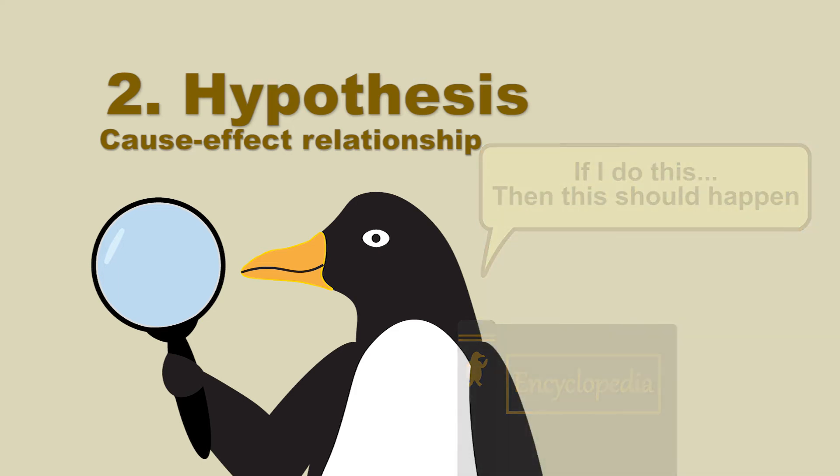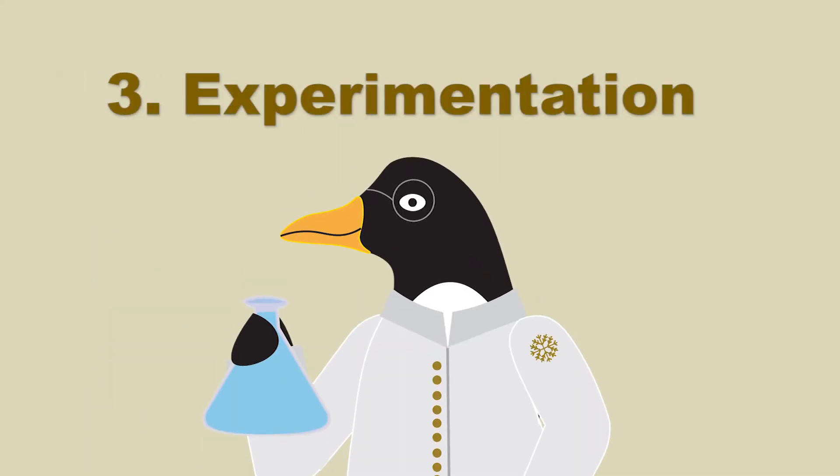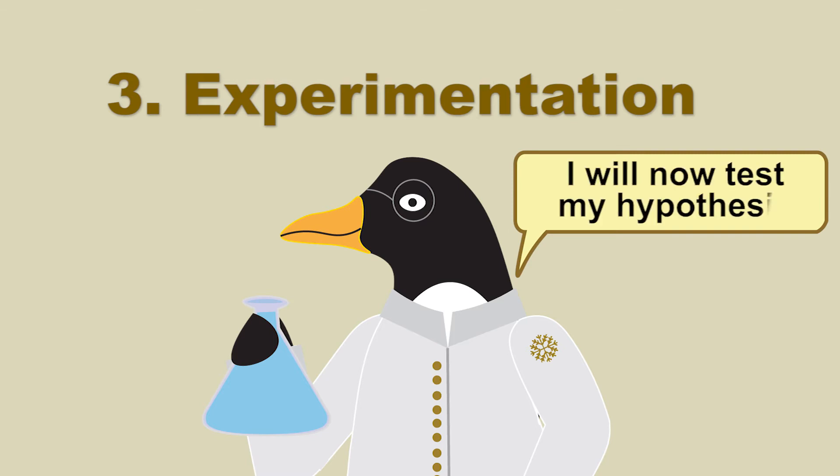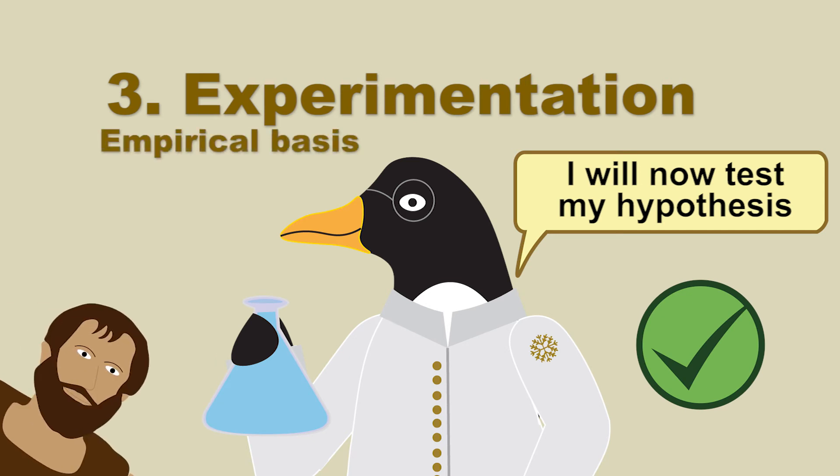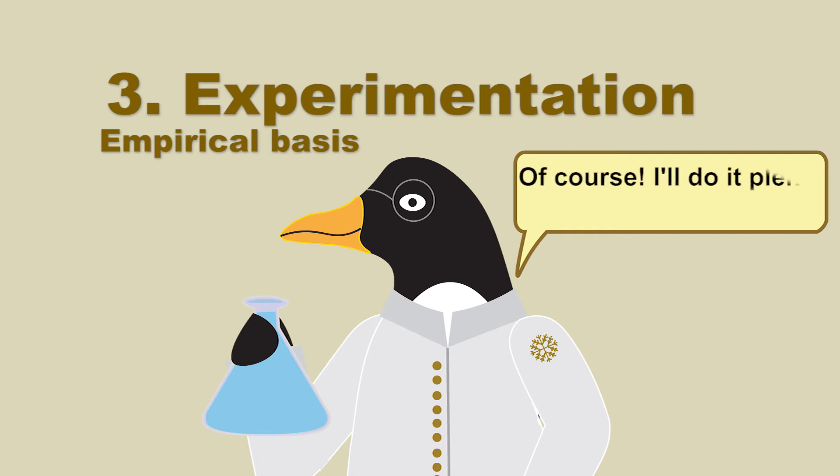Once the hypothesis is clear, we can move on to the experiment, which is creating a specific situation that enables us to check out and prove if our hypothesis was right. This is the empirical part of the process. Something really important to take into account is that the experiment has to be carried out a lot of times, because sometimes statistics with few samples can lead to false assumptions.